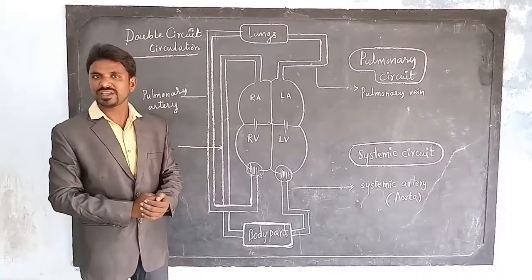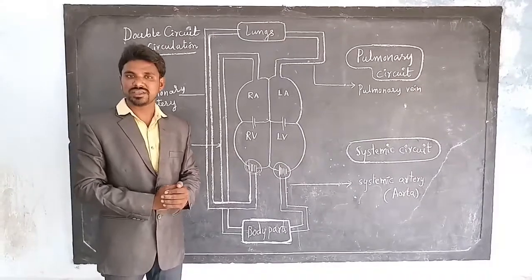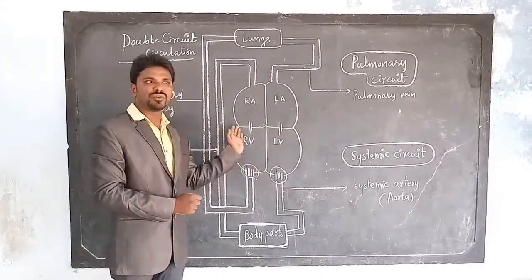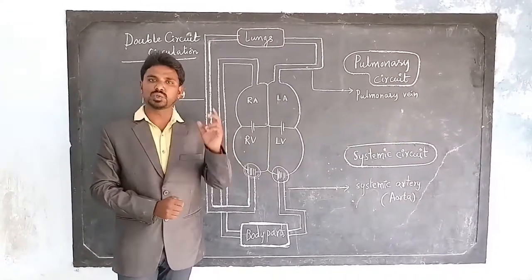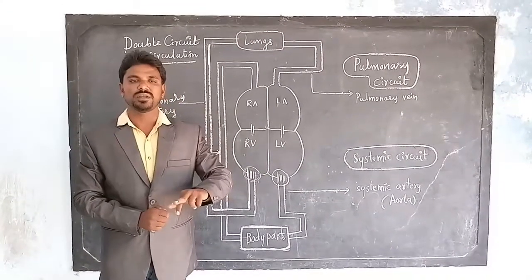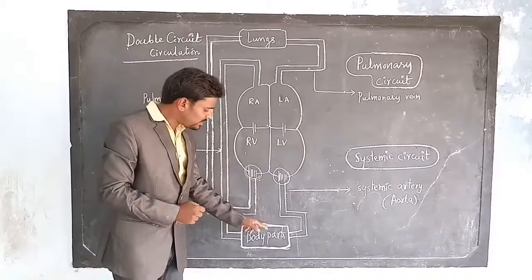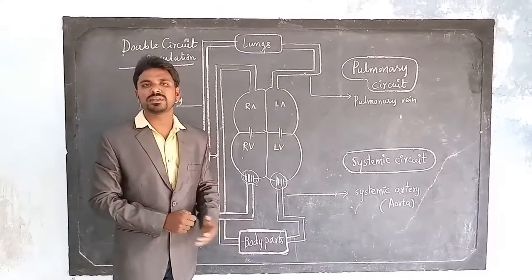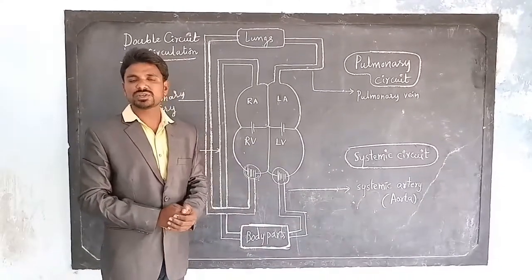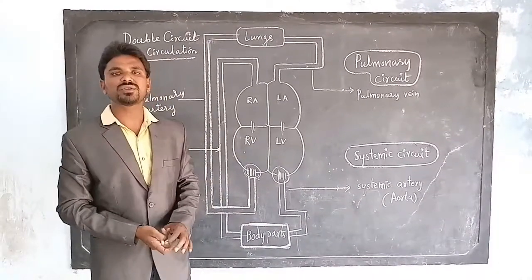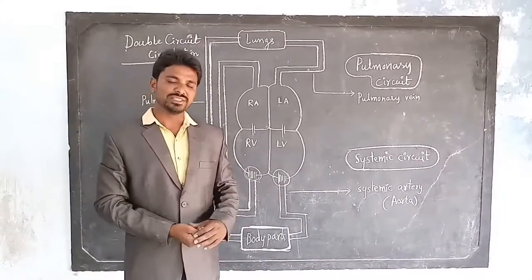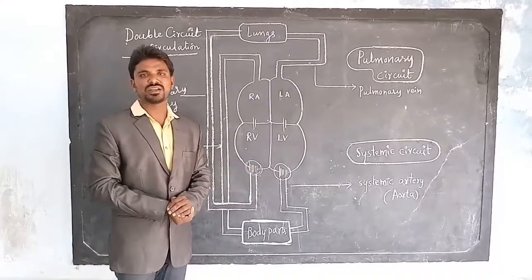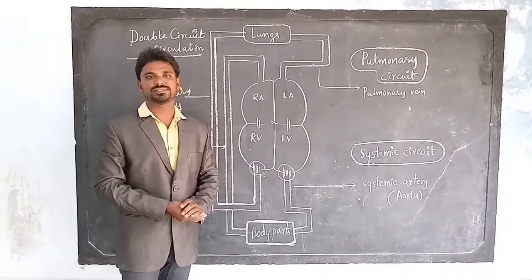We can very clearly understand that the blood is moving through the heart twice and a single circulation is getting completed. So it is called double circuit circulation. This double circuit circulation is seen in fish and also in mammals.